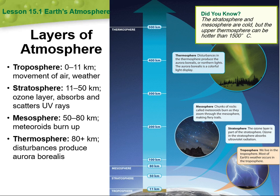After introducing the layers of the atmosphere: we have the troposphere, which is 0 to 11 kilometers, involving movement of air and weather. We have the stratosphere, 11 to 50 kilometers, where the ozone layer absorbs and scatters UV rays. Then we have the mesosphere, 50 to 80 kilometers, where meteoroids burn up. And then we have the thermosphere, 80 plus kilometers, where disturbances produce the aurora borealis.